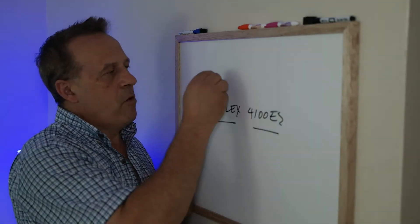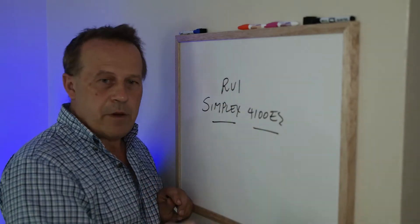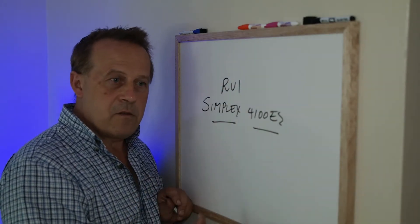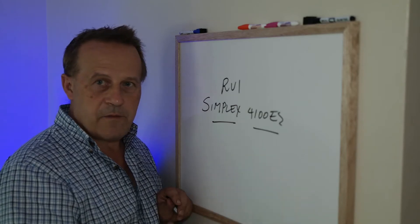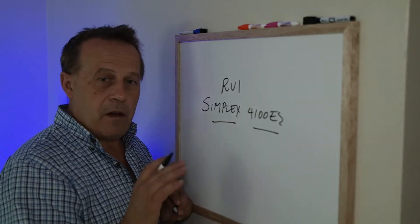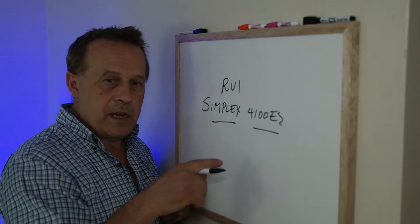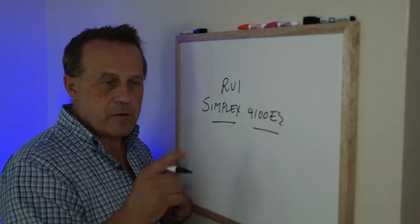Now, remote unit interface, RUI. Every Simplex panel has it, including the old classics, the enhanced, the 4100U. They all have that, and it's right behind the main controller. So we're going to take a look at that.